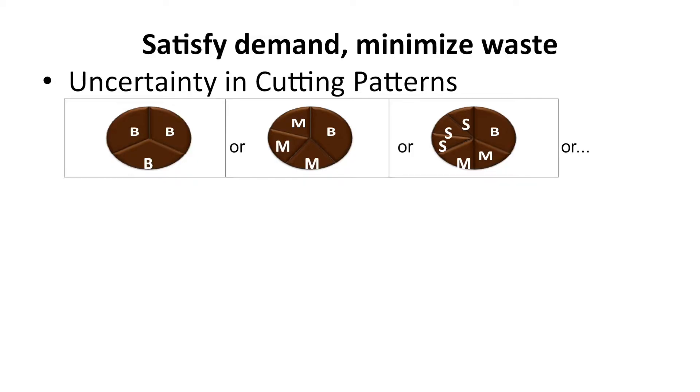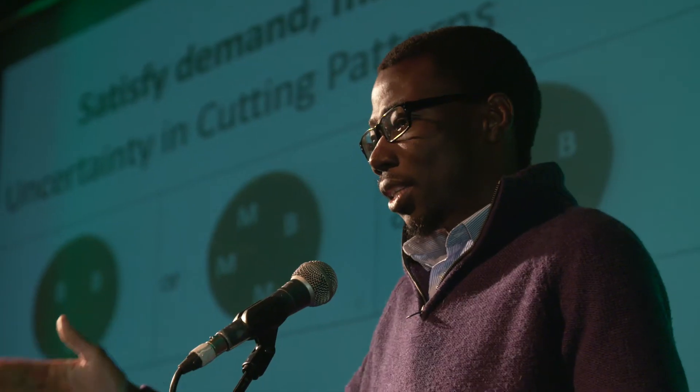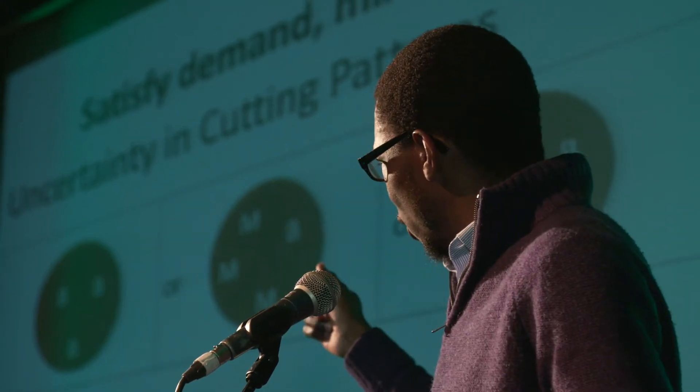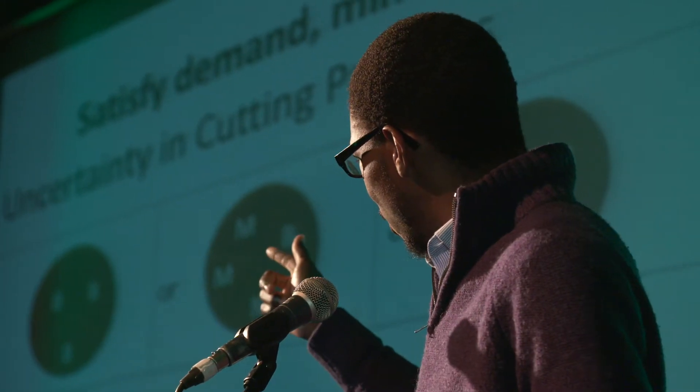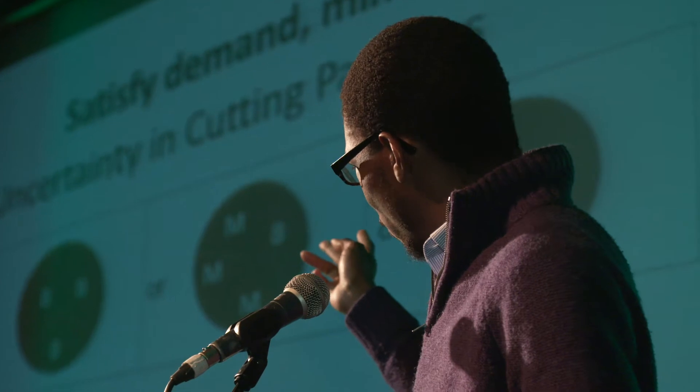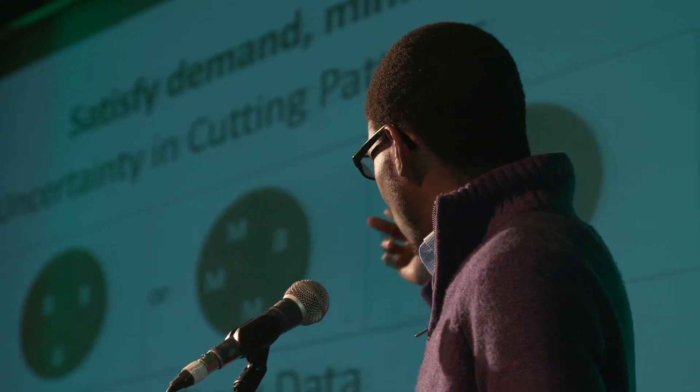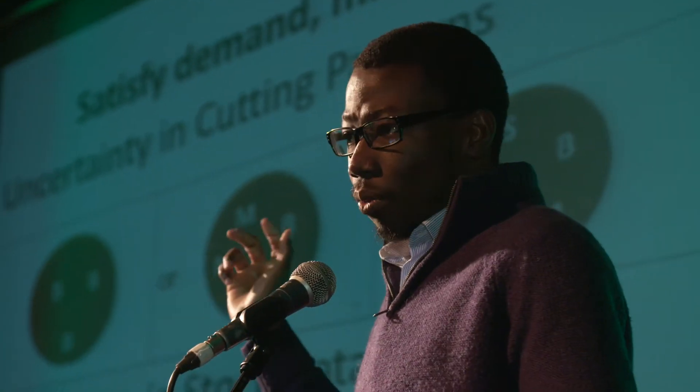The goal of any cutting stock problem is to satisfy demand and minimize waste. Adding uncertainty makes this more difficult. There are three areas of uncertainty I'm looking at. The first is in cutting patterns — a cutting pattern is just a way of dividing your stock so you can satisfy demand. For example, in the first image we have three big slices; in the second, three medium-sized slices or one big slice, and so on.